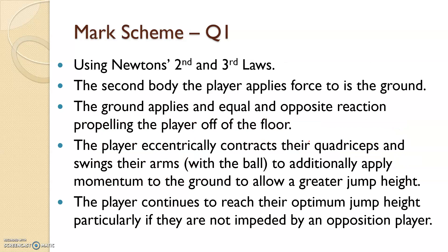Maximum height for a layup jump. That all includes second and third laws. The second body the player applies force to is the ground, so that in order to have the reaction force that will be the ground itself. Hence why the ground applies an equal and opposite reaction propelling the player off the ground. The player eccentrically contracts the quadriceps and swings the arm with the ball to additionally apply momentum to the ground in order to create or allow a greater jump height. The player continues to reach the optimum height.